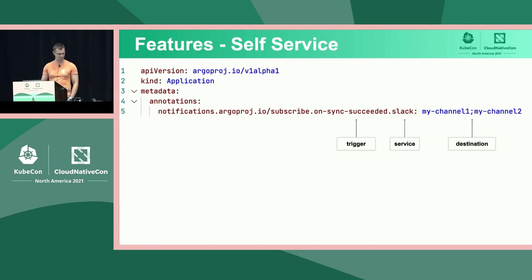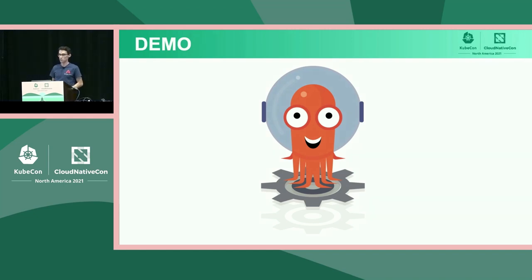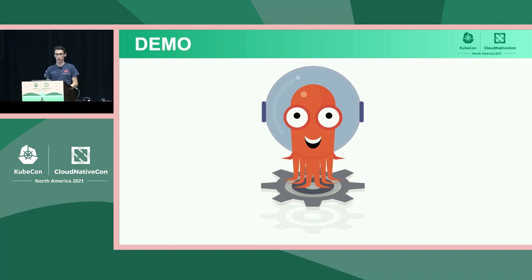Now let's see it live. Before the demo, I'll walk through at a high level what we're configuring: notifications for Argo Rollouts. There are three things needed: first, Argo Rollouts version 1.1, which includes support for the notifications engine; second, configuring the Argo Rollouts notifications ConfigMap as the operator; and third, as the developer, adding an annotation to the rollout to set up notifications for that specific rollout.